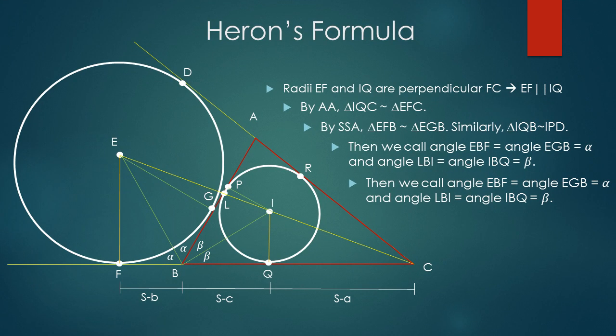Now we are ready to discuss the formal proof of Heron's formula. Because they are radii of the excircle and incircle, EF and IQ are perpendicular to FC. This implies that EF is parallel to IQ. Now let's consider triangles EFC and IQC. Because they share angle C and both have 90-degree angles, they are similar by angle-angle criterion. Now we consider triangles EFB and EGB. Because our previous theorem says FB is equal to BG, also they have right angles and share side EB. By side-side-angle criterion, EFB and EGB are congruent.